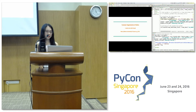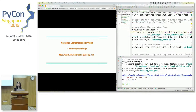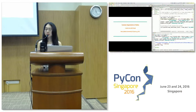This was PyCon SG 2016. An audience member asks: how would you assess the effectiveness of your clustering or decision tree using only offline evaluation — without A/B testing? For example, if you create five different models and have budget to only test one or two, how would you pick?